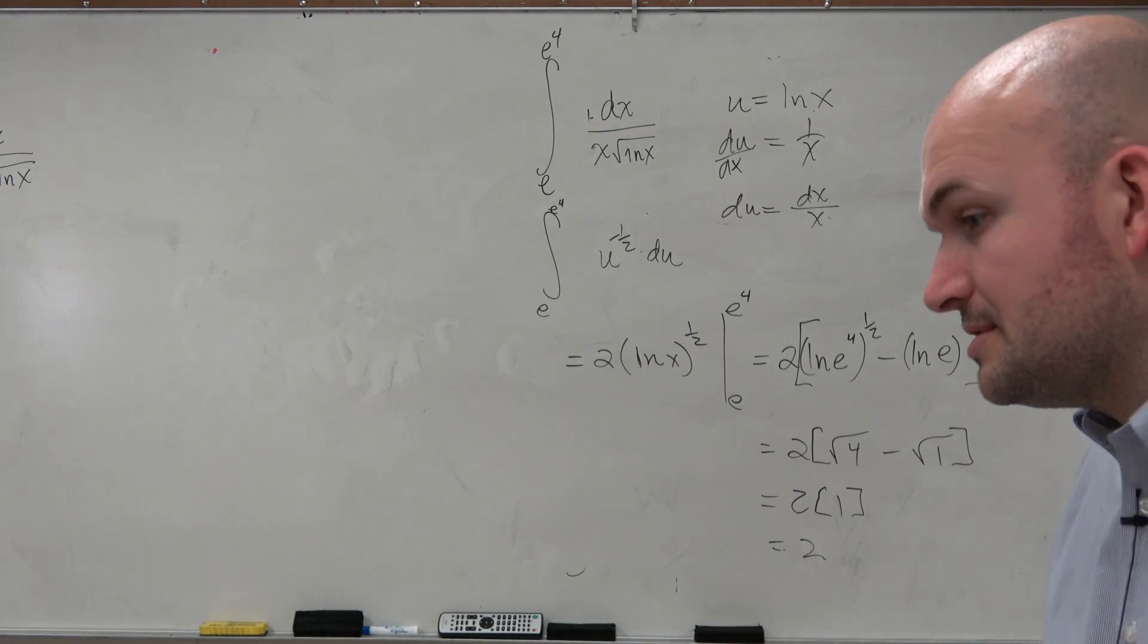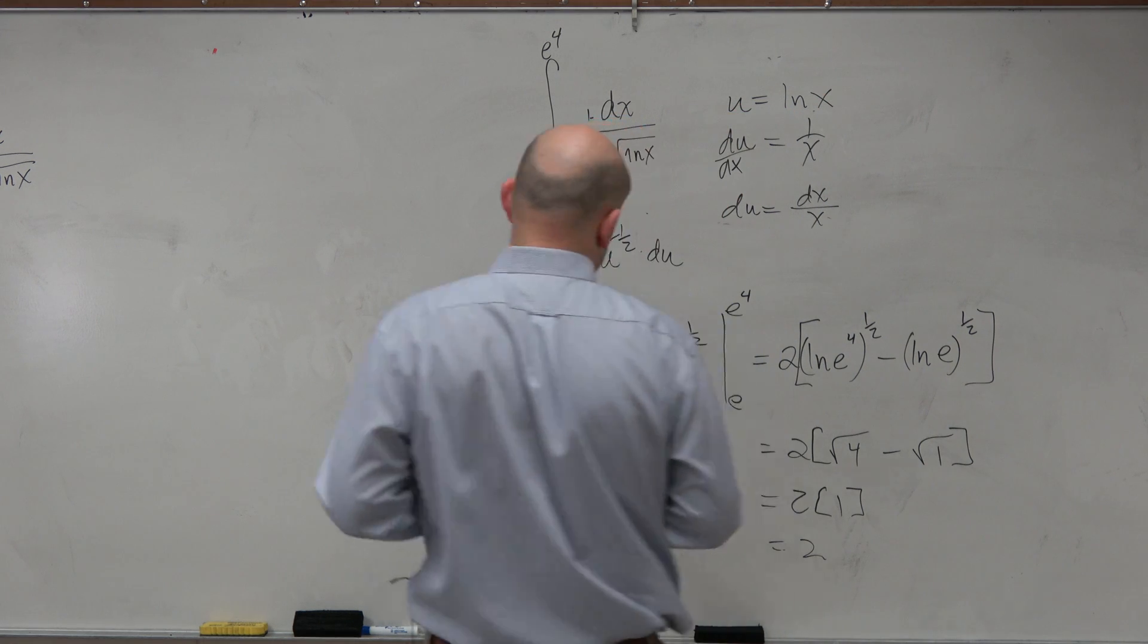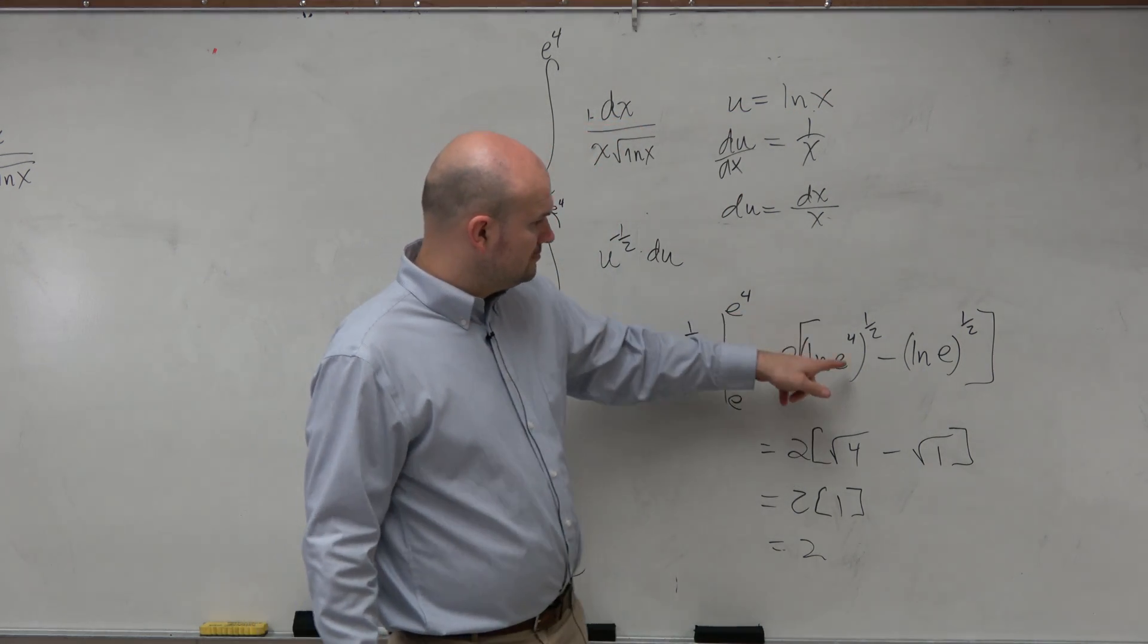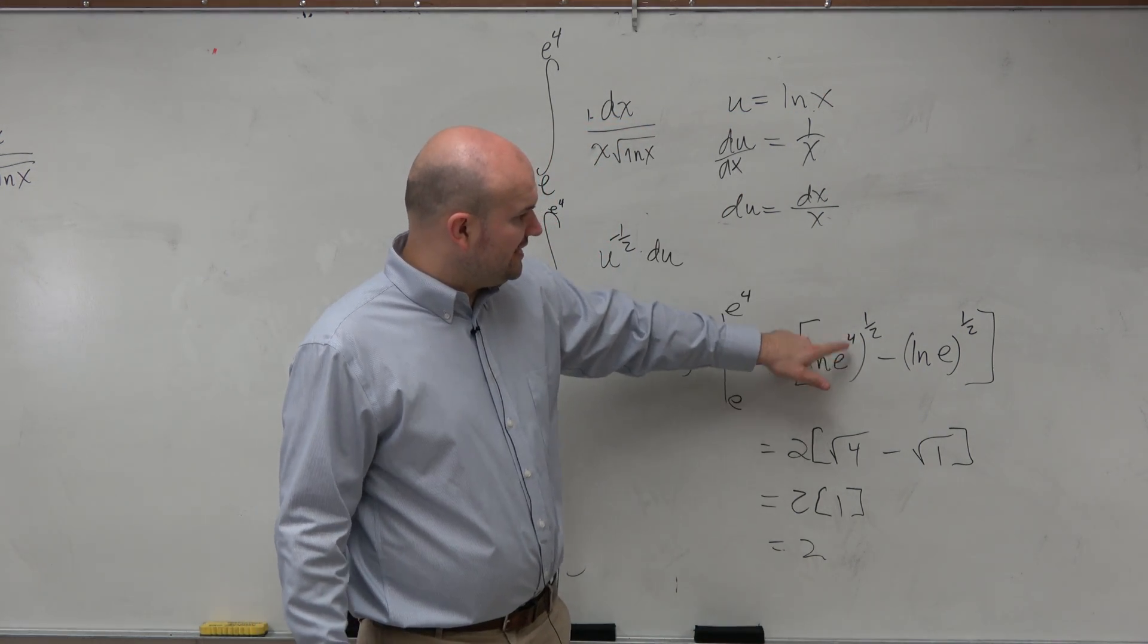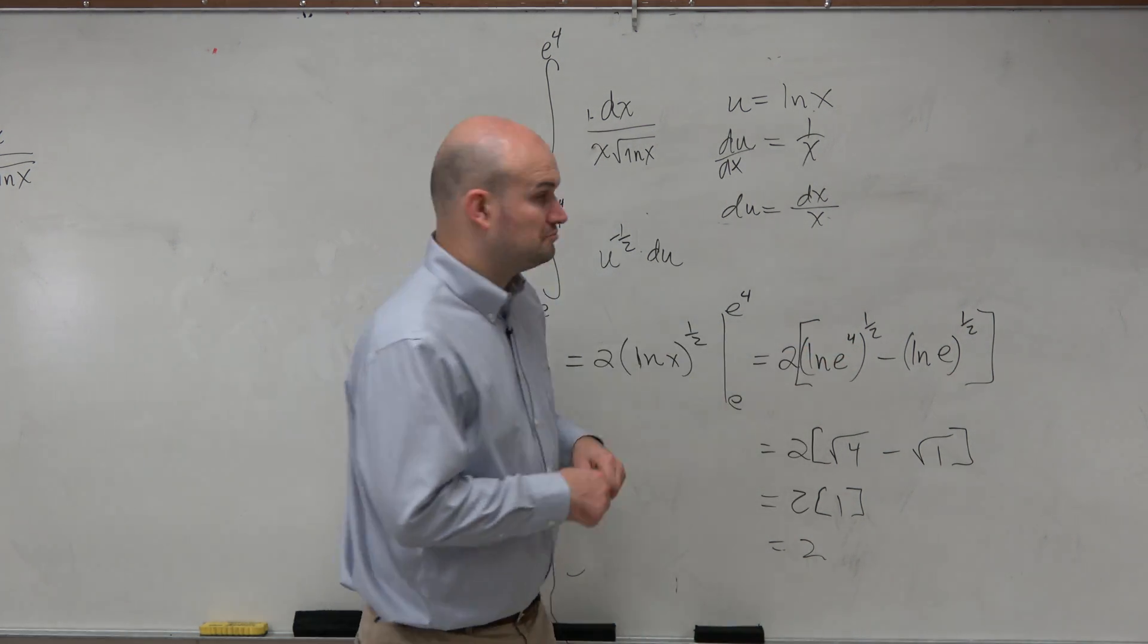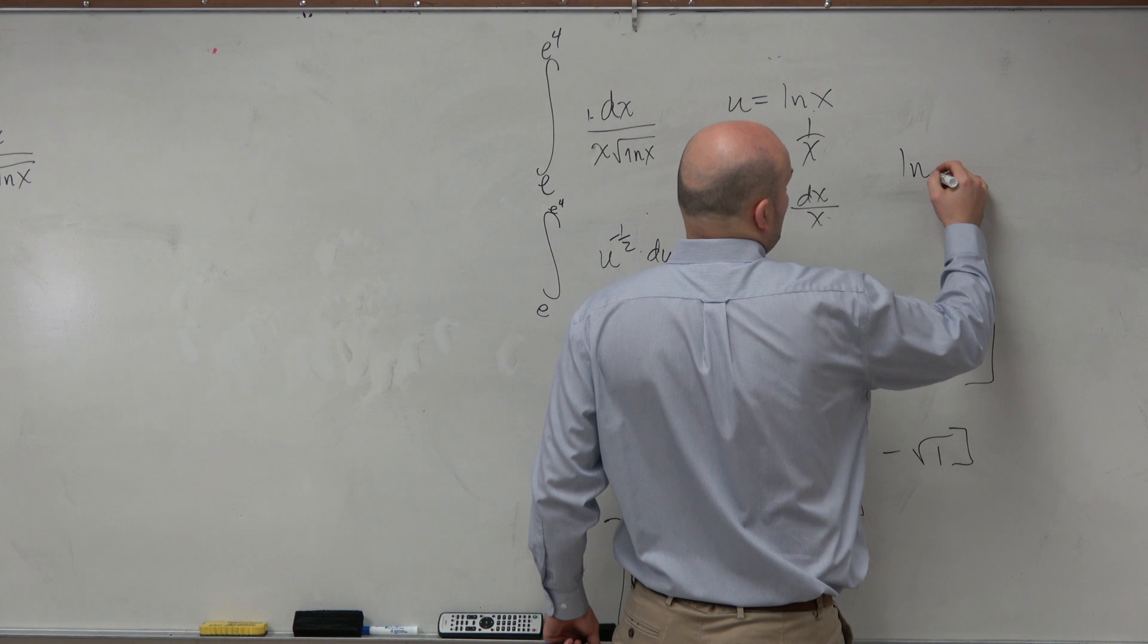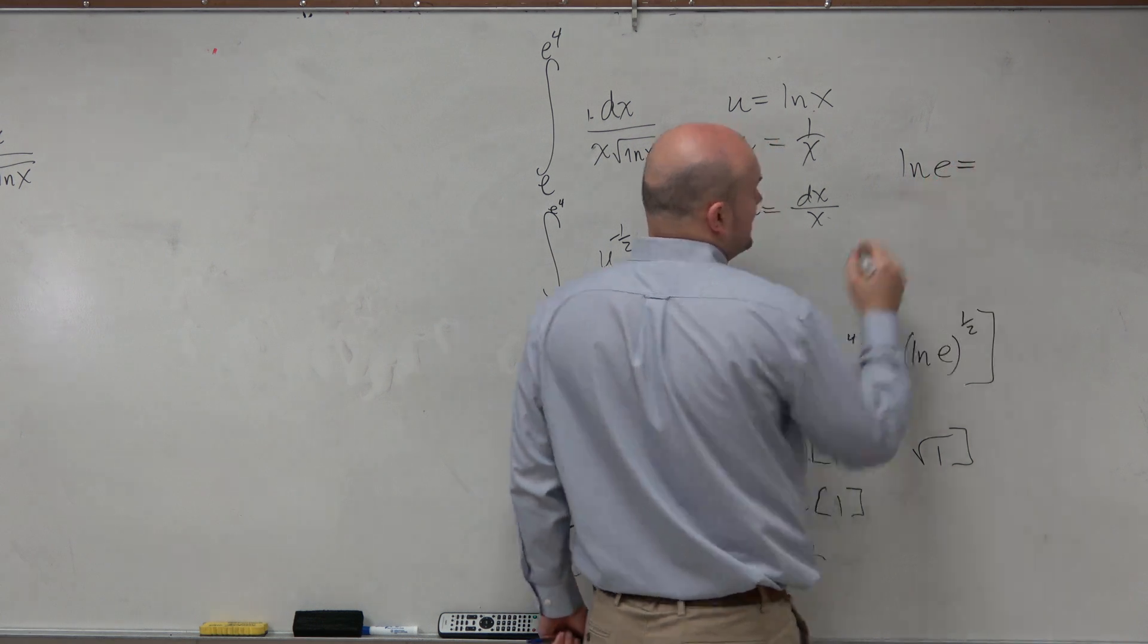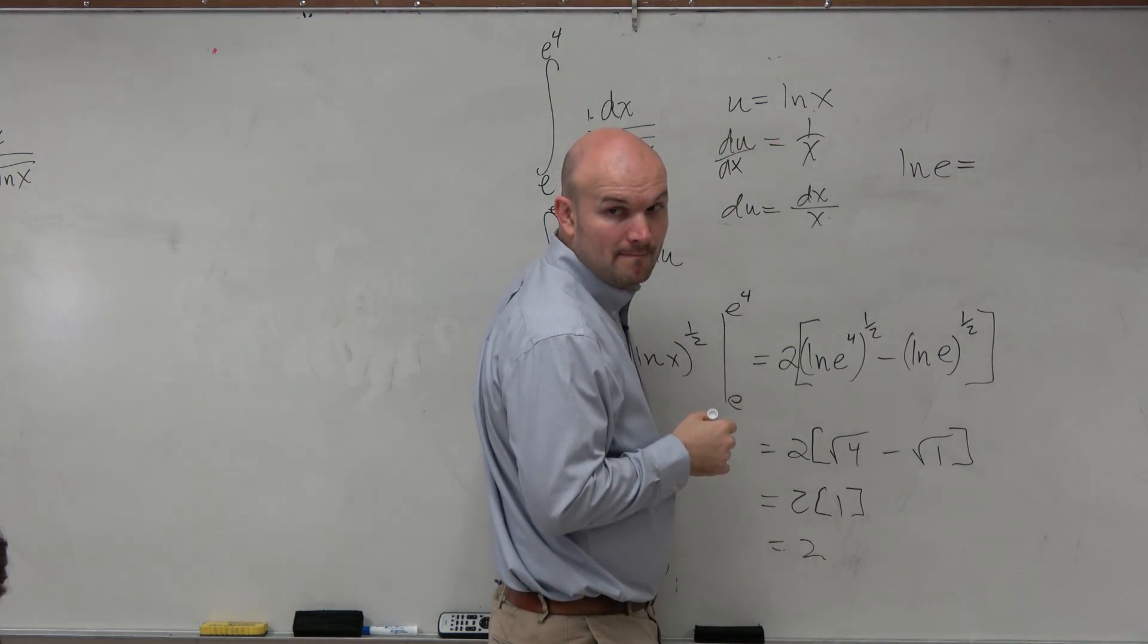Yes, question. How did you get from e to the 4th to the 1 out of the square root of 1? OK. So ln of e raised to the 4th is? ln of e, do you know what that is? What? 1.